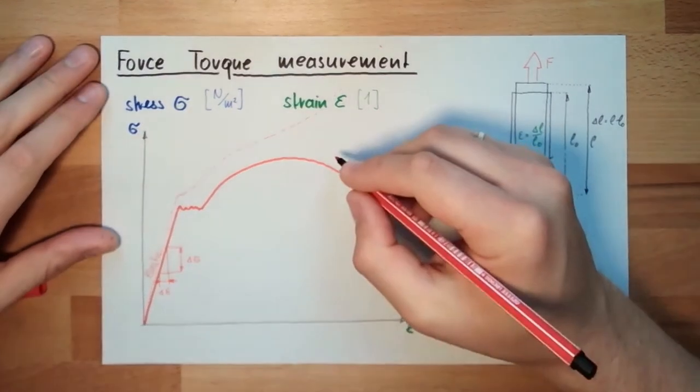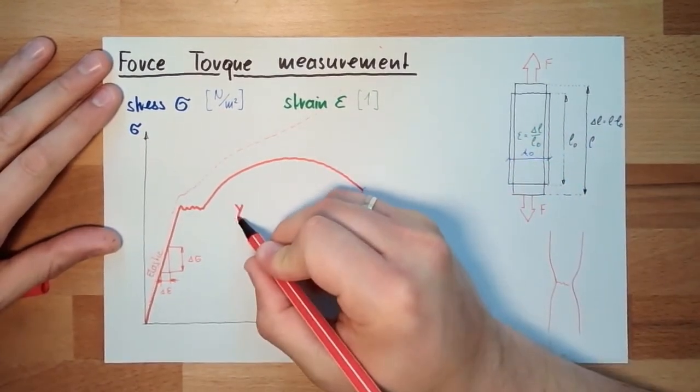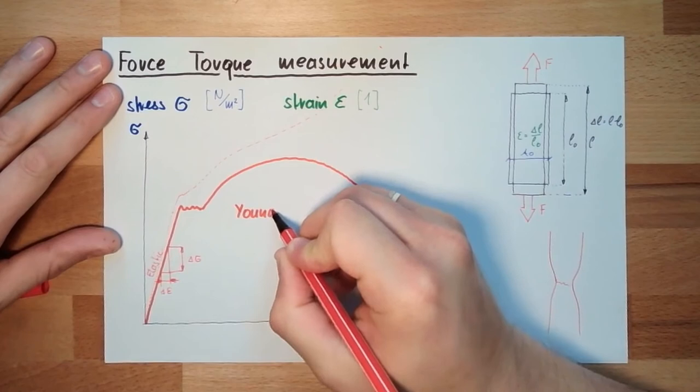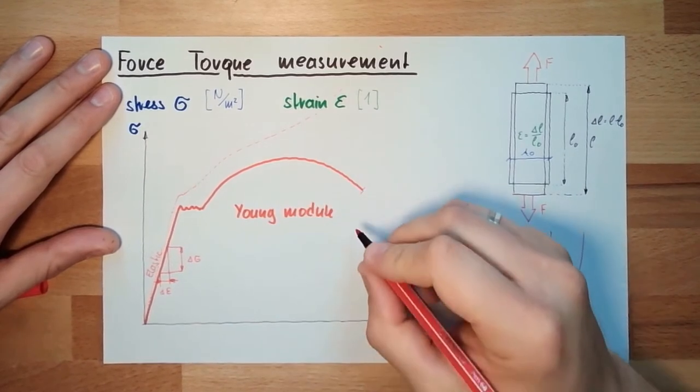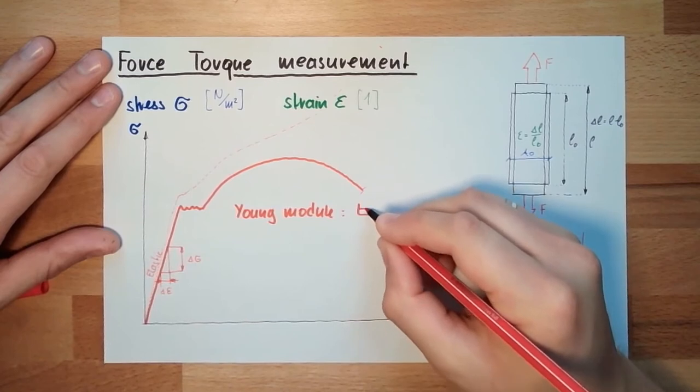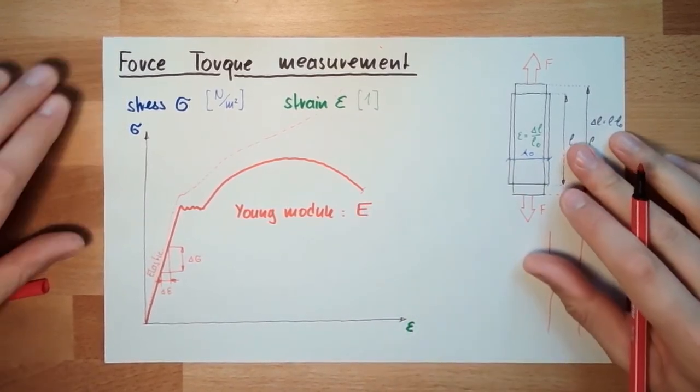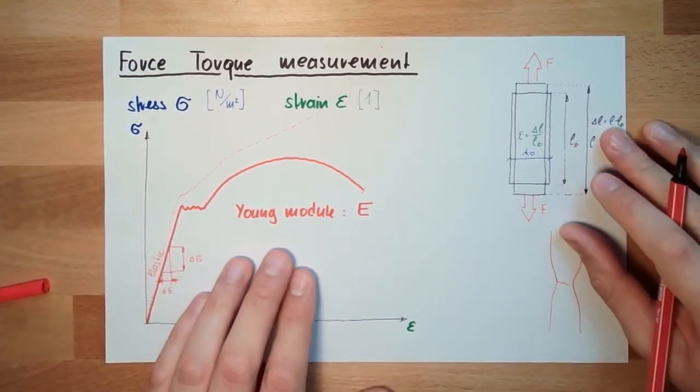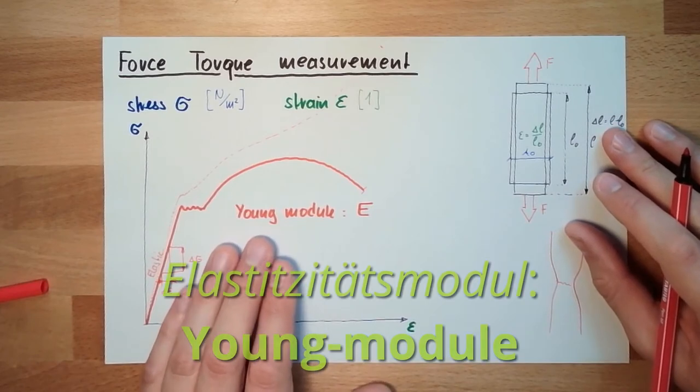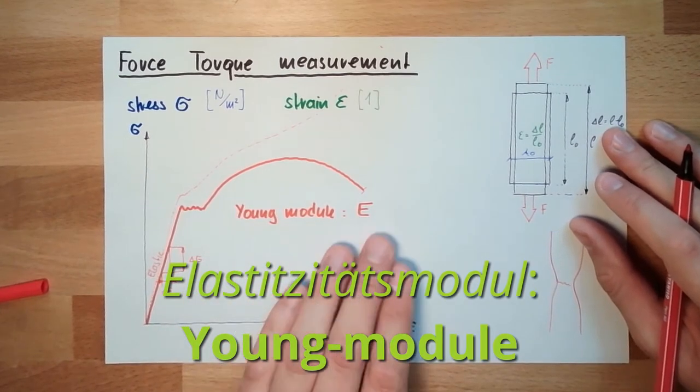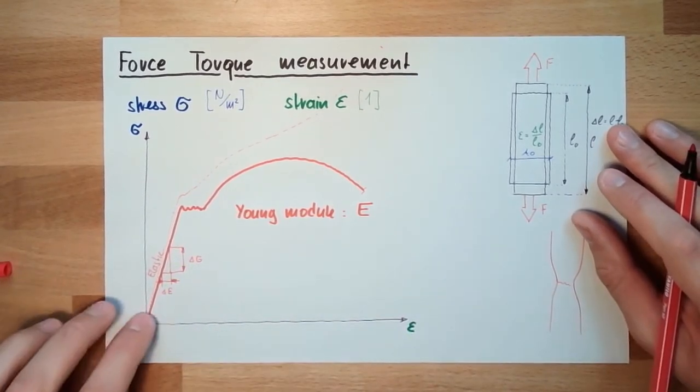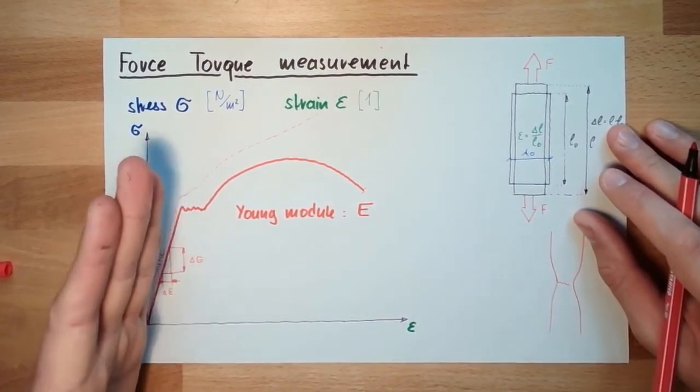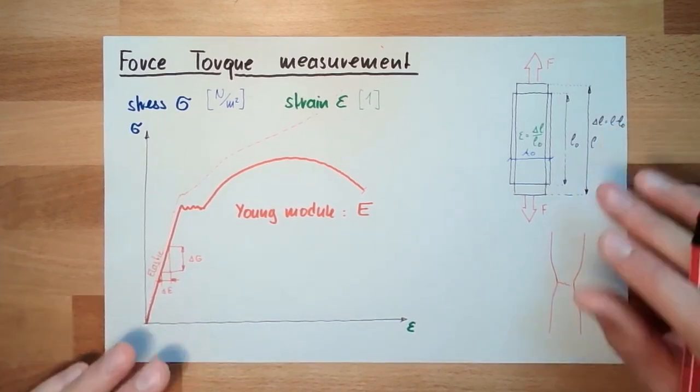And for most materials, it's a pretty good approximation that this is linear. And we have a linear coefficient. That's the so-called Young modulus. And the Young modulus, the sign is E. In German, it's the Elastizitätsmodul, or short, E-modul.